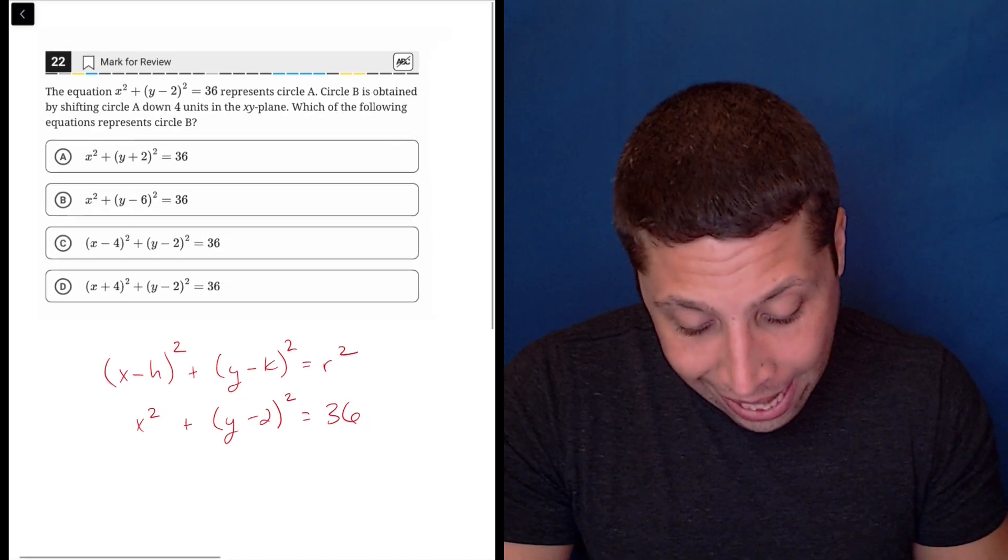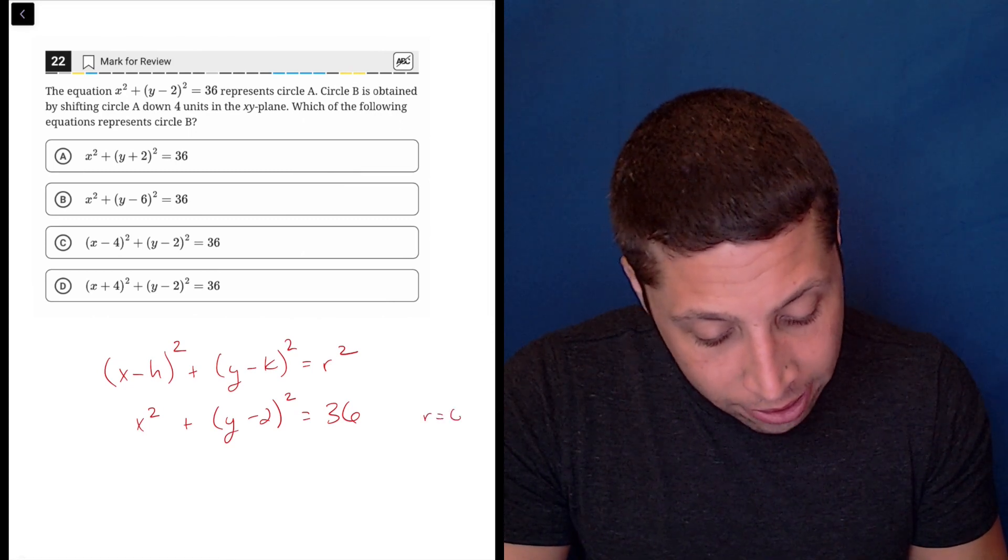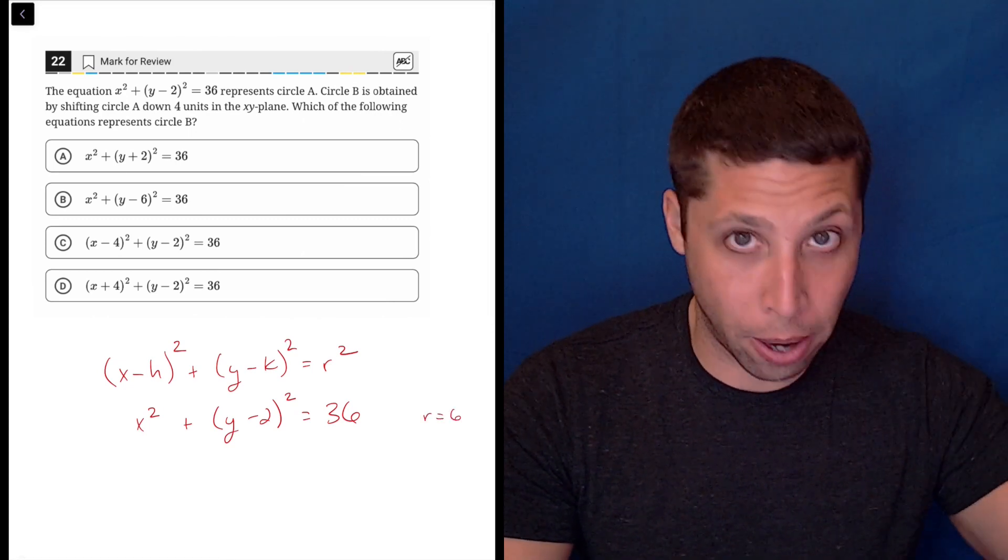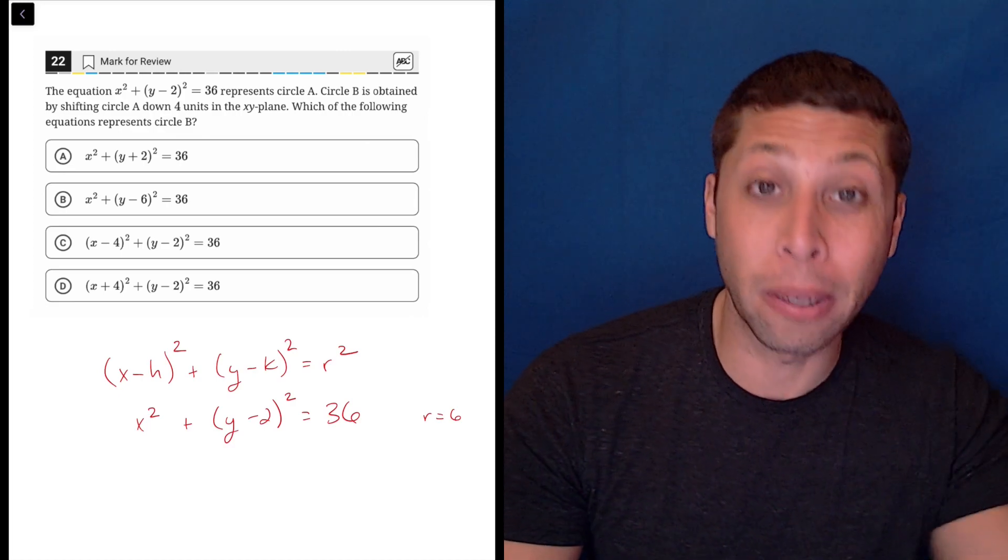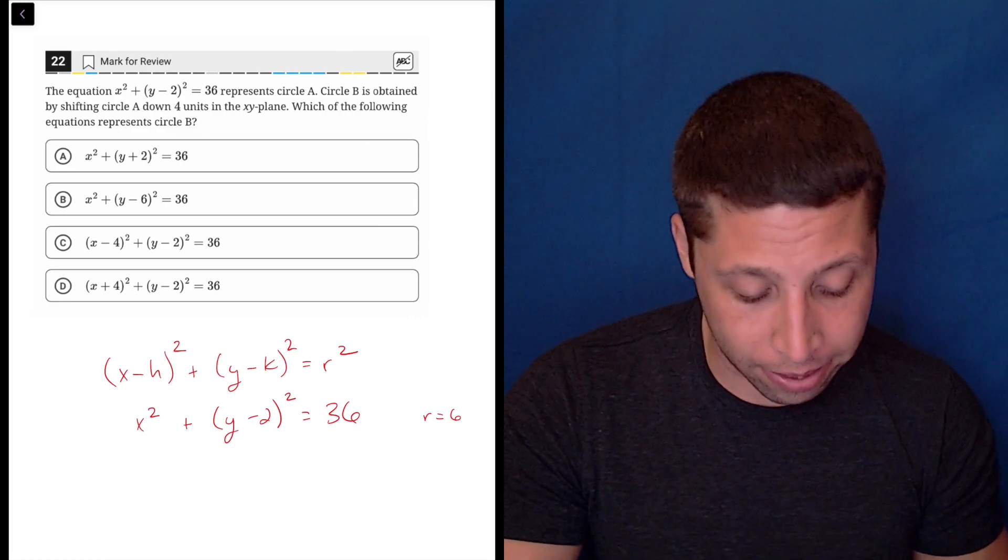So our circle that they gave us, it has a radius of 6, because 6 squared would be 36, so the r squared is kind of built into it. We don't see it for the radius, but it's there.